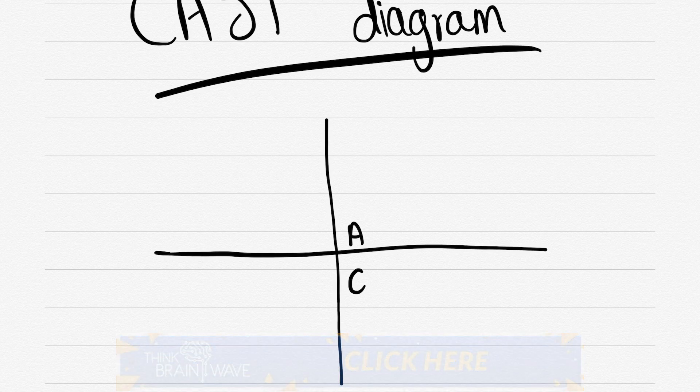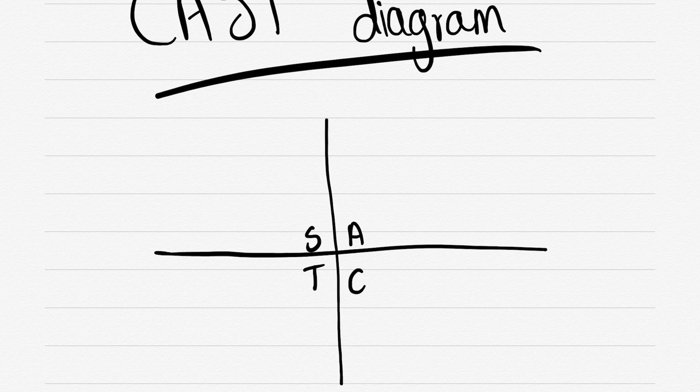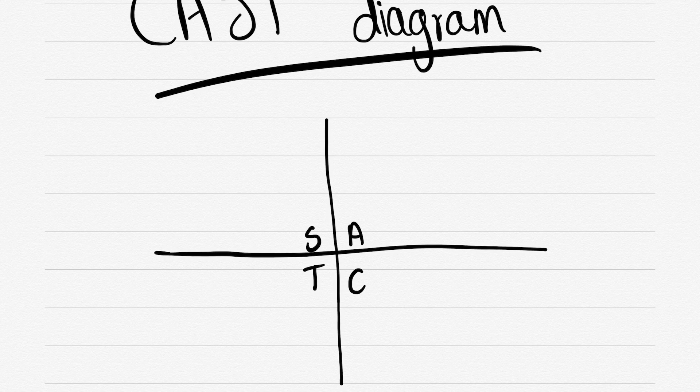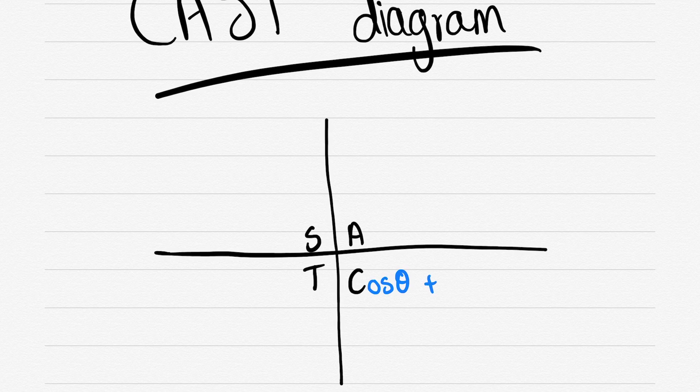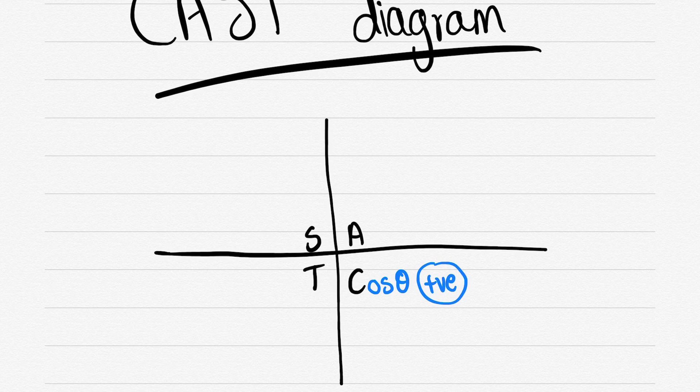So the CAST system works as follows. You have the bottom right being for all cos values. The angle will most certainly be positive at the bottom right there. Then you have A which is all angles are positive in the top right hand quadrants. You then have sine which is all sine values are positive in the top left hand quadrants. And then you have the tan values in bottom left being positive.